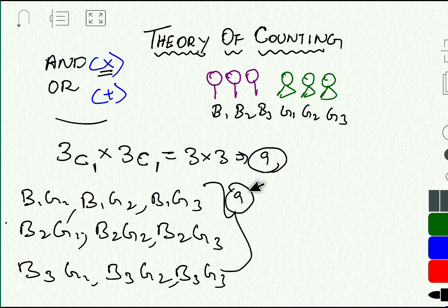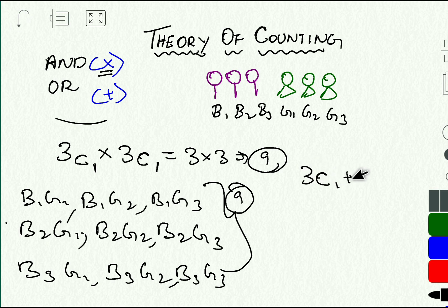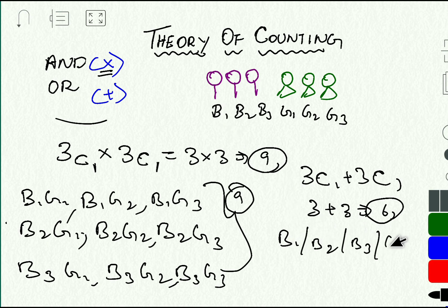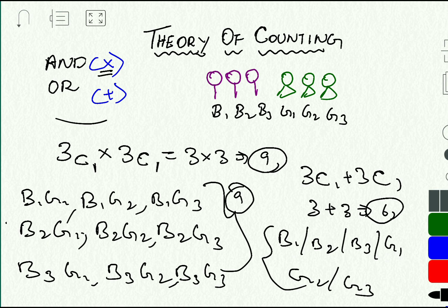Now assume the question is: in how many ways can you select one boy out of these three boys or one girl out of these three girls? So we write it as 3C1 plus 3C1. 3C1 means three, so 3 plus 3 gives you totally six combinations possible. If it is 'and' you use multiplication; if it is 'or' you use plus. You can select B1 or B2 or B3 or G1 or G2 or G3 — so we totally get six such combinations possible.